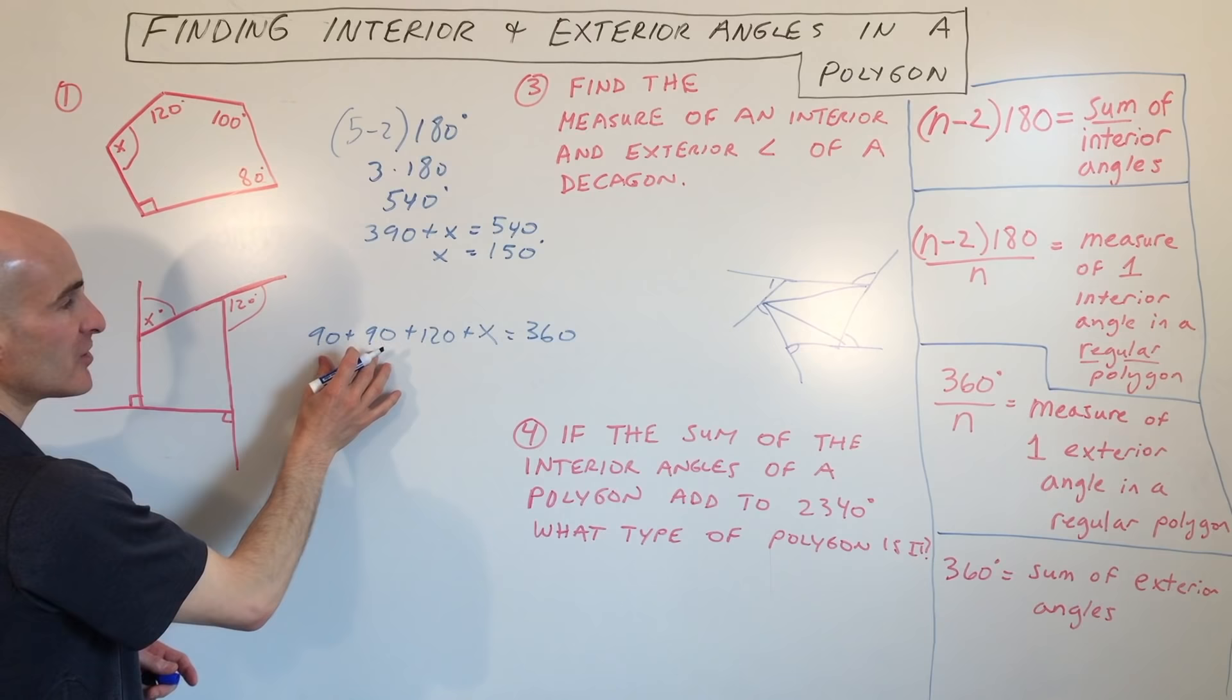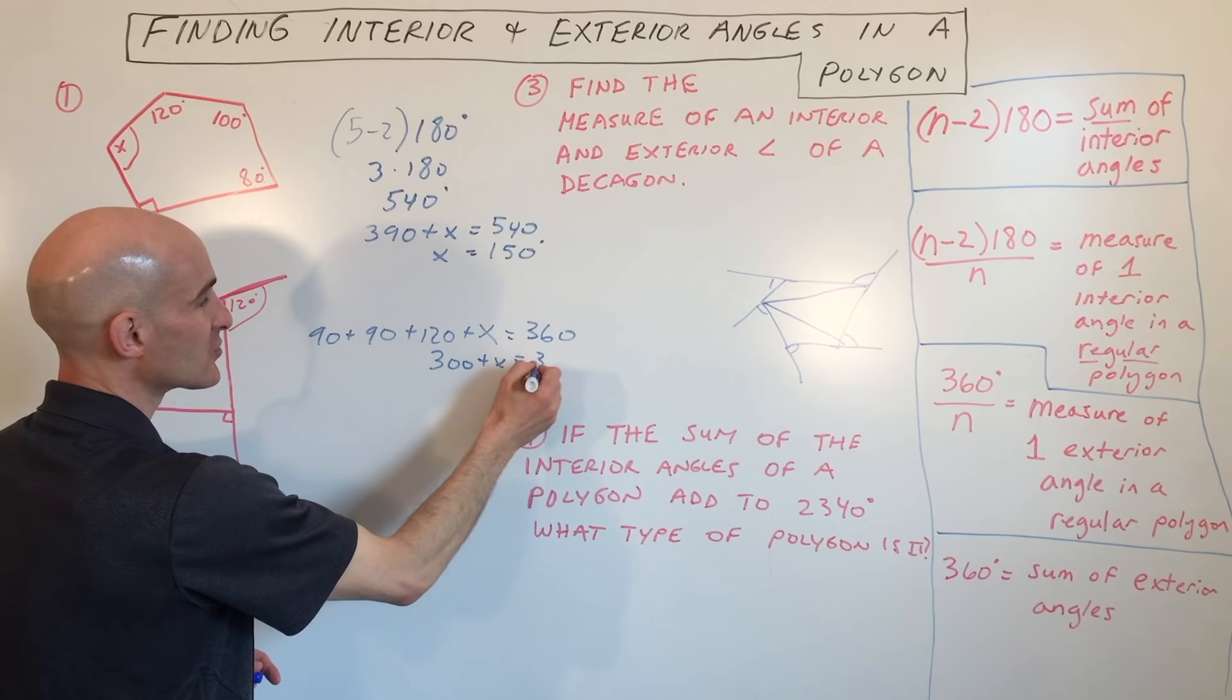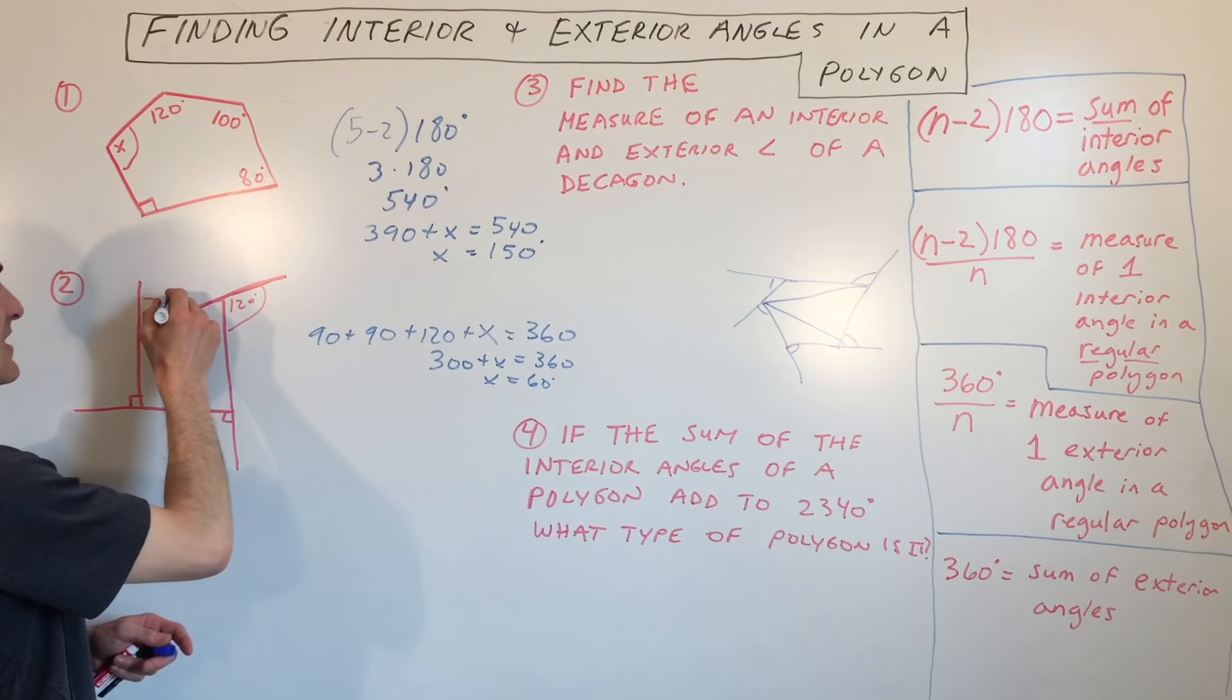So that's 180 plus 120 is 300, so 300 plus x equals 360. And if we subtract 300, we can see that x equals 60 degrees. That's this angle right here.